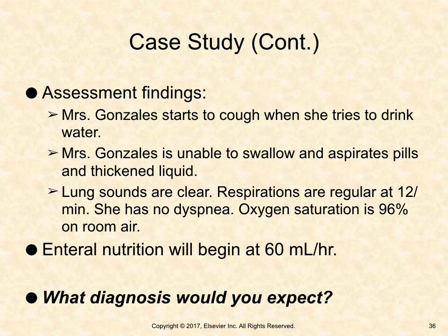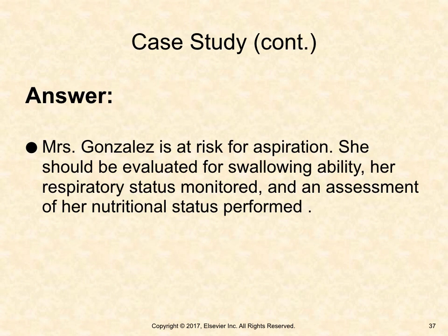Case study assessment findings: Mrs. Gonzalez starts to cough when she tries to drink water. She is unable to swallow and aspirates pills and thickened liquid. Her lung sounds are clear, respirations are regular at 12 per minute, she has no dyspnea, and oxygen saturation is 96% on room air. The provider has ordered enteral nutrition to begin at 60 mL/hr. Mrs. Gonzalez is at risk for aspiration; she should be evaluated for swallowing ability, her respiratory state should be monitored, and an assessment of her nutritional status should be performed.